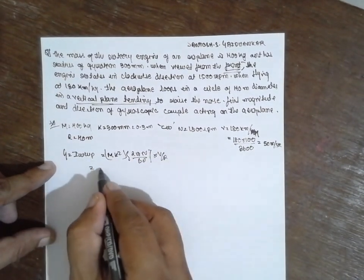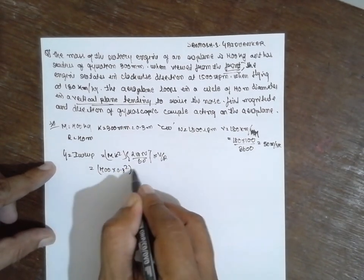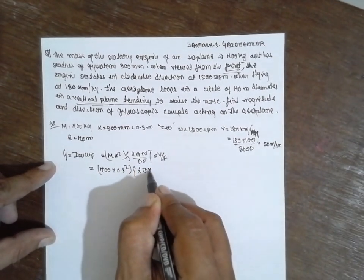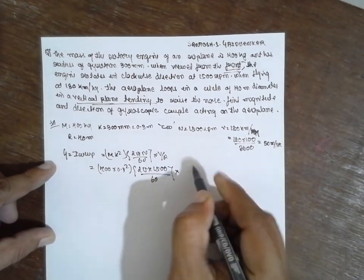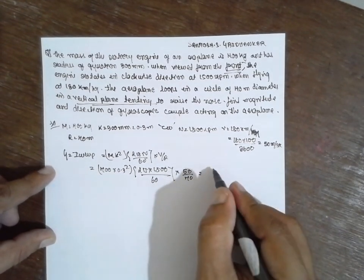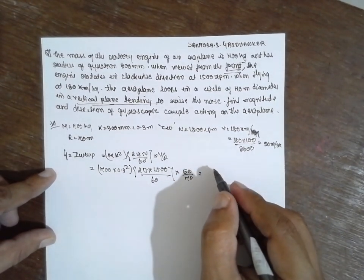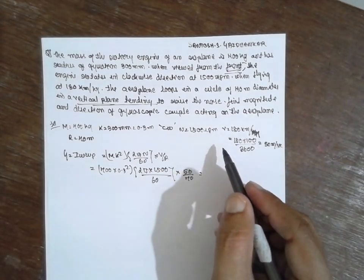m is nothing but 400, k is 0.3 square, 2 pi into 1500 divided by 60, into v is nothing but 50 divided by r is 40. The answer will be, r is 40 or 20 here. r is 40.